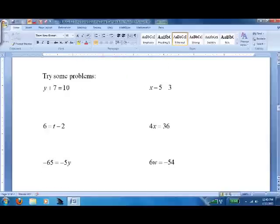So here's some practice for you. Simple one step. Subtract 7 both sides. Y equals 3. Not done. 3 plus 7 equals 10. Check. Add 5 both sides. X equals 8. Not done. 8 minus 5 equals 3. Check.